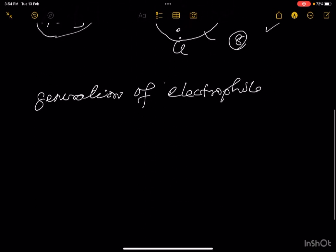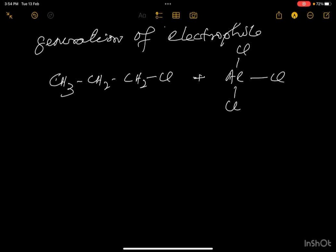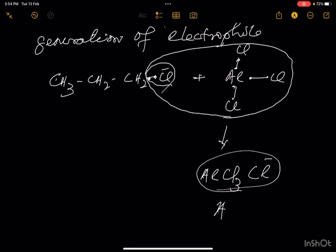Generation of electrophile by the help of anhydrous AlCl3: CH3-CH2-CH2-Cl combines with AlCl3. Since AlCl3 is electron-deficient, it needs another 2 electrons. It combines with the chlorine's 2 electrons from the C-Cl bond, forming AlCl4-. The chlorine becomes Cl-, which joins AlCl3 to form AlCl4-.